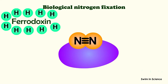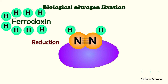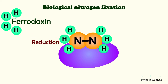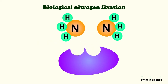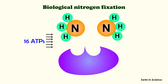A reducing agent such as ferrodoxin transfers three successive pairs of hydrogen atoms to nitrogen in a series of reduction reactions. Finally, two molecules of ammonia are released, freeing the nitrogenase enzyme. This reaction requires a large input of energy — that is, about 16 ATPs.